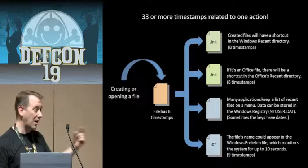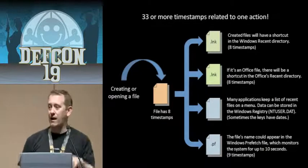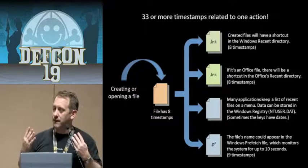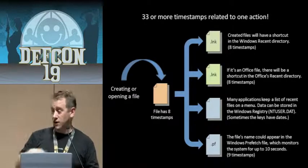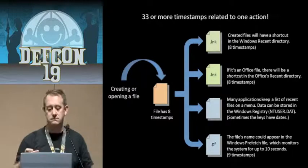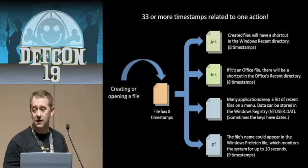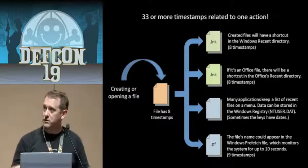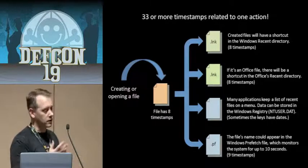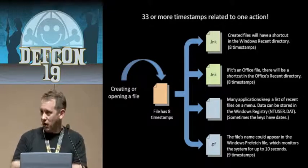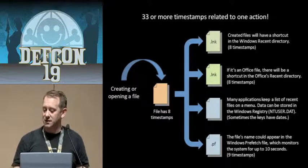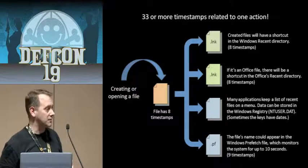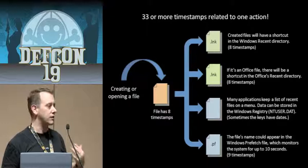Whenever we open or create a file on a Windows-based system, the file itself is going to have eight timestamps — four standard information, four file name. The shortcut caught in My Recent Documents will have eight timestamps. If it's an Office file, that's another eight timestamps. Then there are registry entries, and the prefetch will have nine timestamps — so now we have 33 timestamps to worry about.